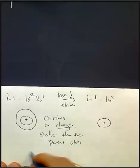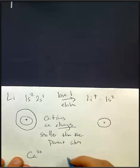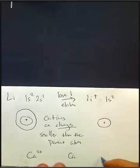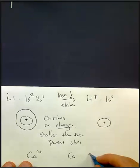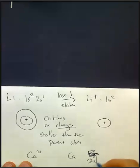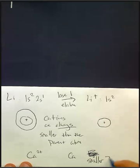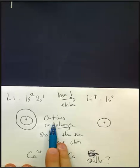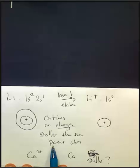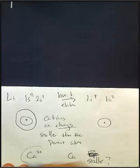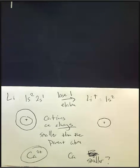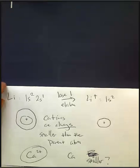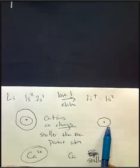If I gave you calcium 2 plus and calcium, and ask you to pick the smaller of them, which one is smaller? The cation is always smaller than the parent, so the smaller of these two would be that guy.